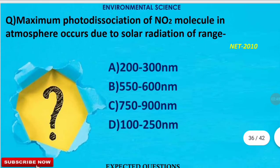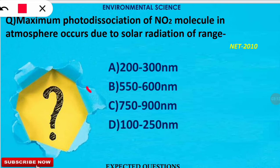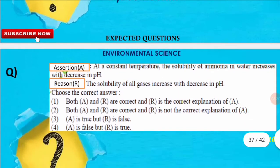The next question is: maximum photo dissociation of the nitrogen dioxide (NO₂) molecule in the atmosphere occurs due to solar radiation of what range? Photo dissociation means the breakdown of NO₂ with the help of photons from solar energy. The correct option is B — solar radiation in the range of 550 to 600 nanometers, which falls within the visible range of 400 to 700 nm.